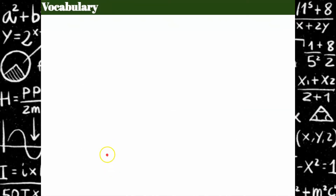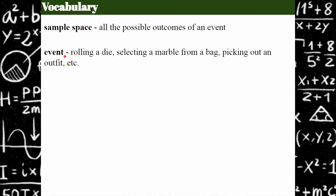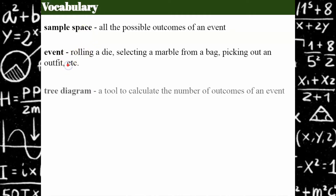First let's review some vocabulary so you understand the words that I'm using. A sample space is all the possible outcomes of an event — you're going to create this today using tree diagrams and tables. An event could be anything: rolling a die, selecting a marble from a bag, picking out an outfit, flipping a coin — anything when you want to know the probability of something occurring. A tree diagram is a tool to calculate the number of outcomes of an event, a way to organize all the possible outcomes that can happen, and we're going to make one of these.